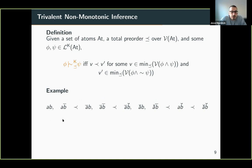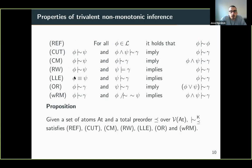Here is an example: 'if B, then usually A' holds because the world confirming both A and B is strictly more plausible than the world which validates B but falsifies A. We also generalized the KLM properties for non-monotonic inference to the three-valued setting. The only adjustment needed was for rational monotony, where you have to be careful which negation you use — since there are two kinds of negation — and we used weak negation here. We could show that these three-valued non-monotonic inferences satisfy all of the KLM postulates.